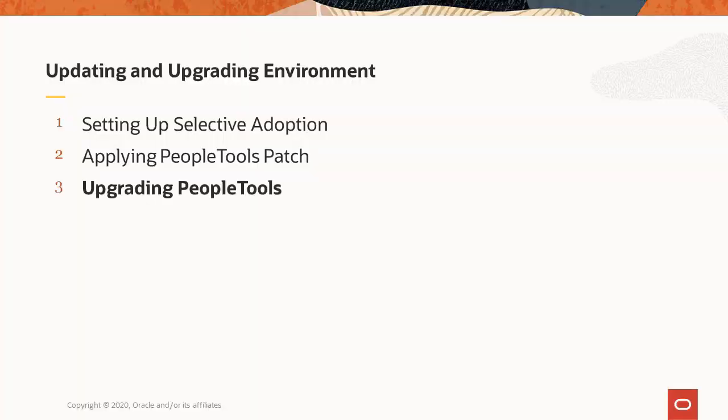If you have subscribed to a newer release of PeopleTools, you will be able to upgrade your PeopleTools release. Similar to applying a PeopleTools patch, if the target environment is on 8.57 or above, configurations made to the Application Server and Process Scheduler Server are preserved during a PeopleTools upgrade. However, for a PeopleTools upgrade, the web server configurations are not preserved. The upgrade will redeploy the web server.